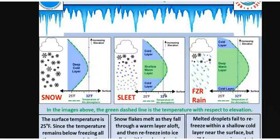Snow, sleet, and freezing rain generally occur in the winter months when we have cold air and temperatures at zero degrees Celsius, or 32 degrees Fahrenheit, or lower. So this is what we're going to be looking at.